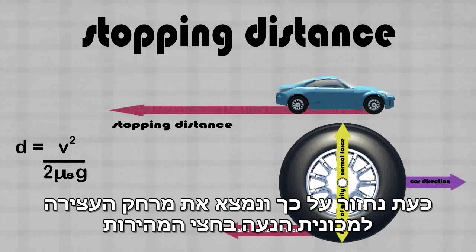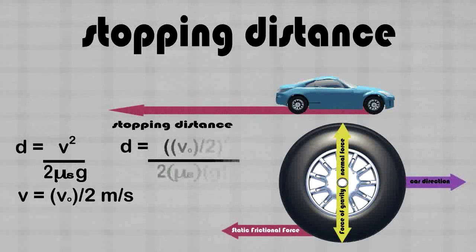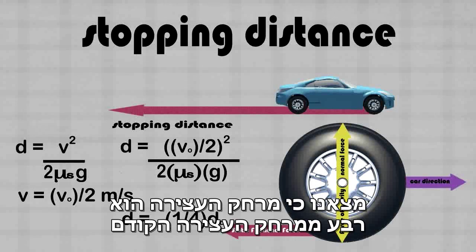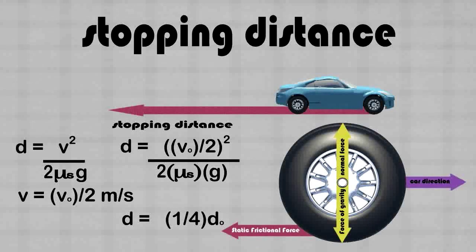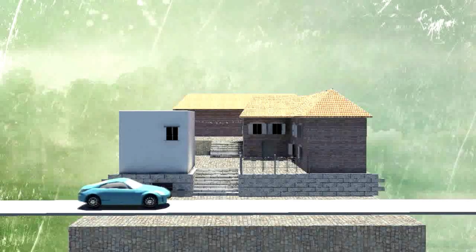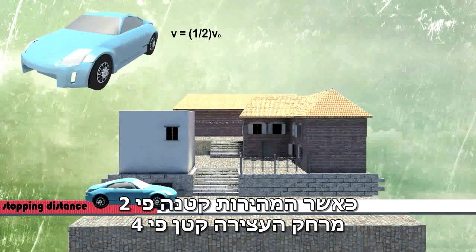Let's run through the equation again, but this time we will see what the stopping distance is when our car is traveling at half the original speed. We find that the distance is a quarter of the original stopping distance. So when the velocity is halved, the distance is only a quarter of what it originally was.